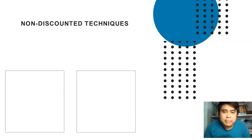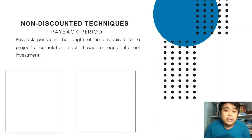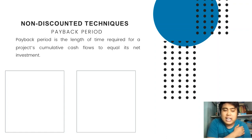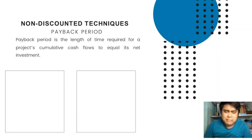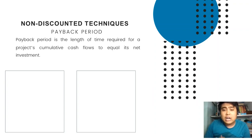Before we apply ARR, let us also discuss the next technique: payback period. Payback period is defined as the length of time required for a project's cumulative cash flow to equal its net investment. In simple terms, it represents how many years will pass before the money I spent is returned.